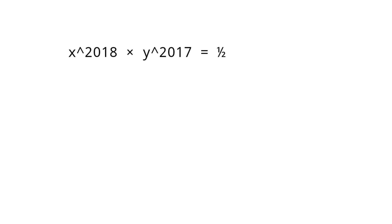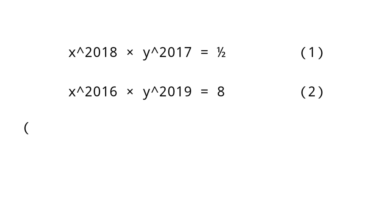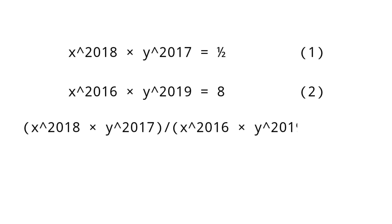For solving this problem, divide equation 1 — x raised to 2018 into y raised to 2017 equals 1 by 2 — by equation 2 — x raised to 2016 into y raised to 2019 equals 8. Then we get x raised to 2018 into y raised to 2017, divided by x raised to 2016 into y raised to 2019, equals 1/2 by 16. That is, x squared by y squared equals 1 by 16.